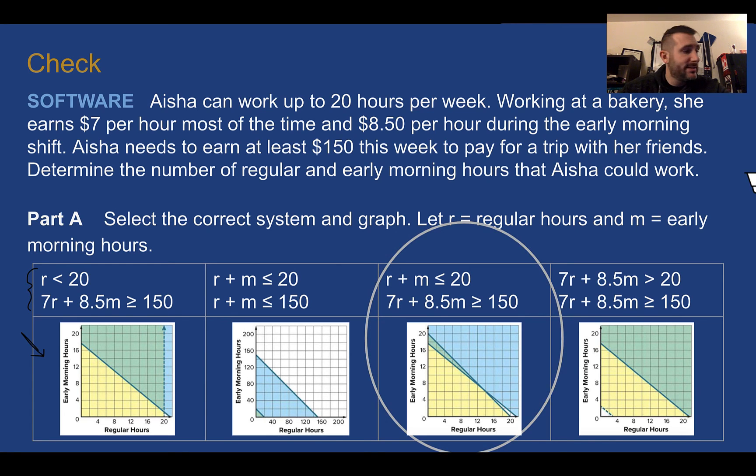Check your answer. You should have picked C. R plus M is less than or equal to 20 and 7R plus 8.5M is greater than or equal to 150. So let's piece this together. She can work up to 20. So less than 20 is good. Not more than that. This is hours. So let's find more things about hours. They don't specify, but she can work during the early morning or she can work during her regular hours most of the time. Our second constraint is money. She wants to earn at least 150. So 150 at the lowest, probably more than that. This is dealing with money. So we're dealing with money and we're dealing with money. 7 is for the regular hours. 8.5 is for the morning. Has to be more than or equal to 150. And regular plus morning hours have to be less than or equal to 20.